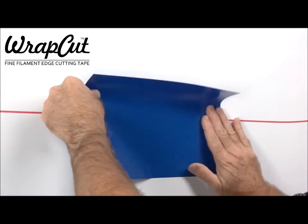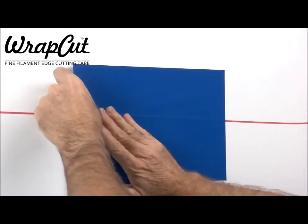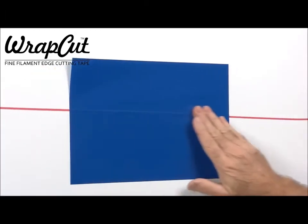Be sure that the cutting filament of the tape is positioned along the line to be cut, and that the vinyl film and tape are pressed down firmly to the surface.